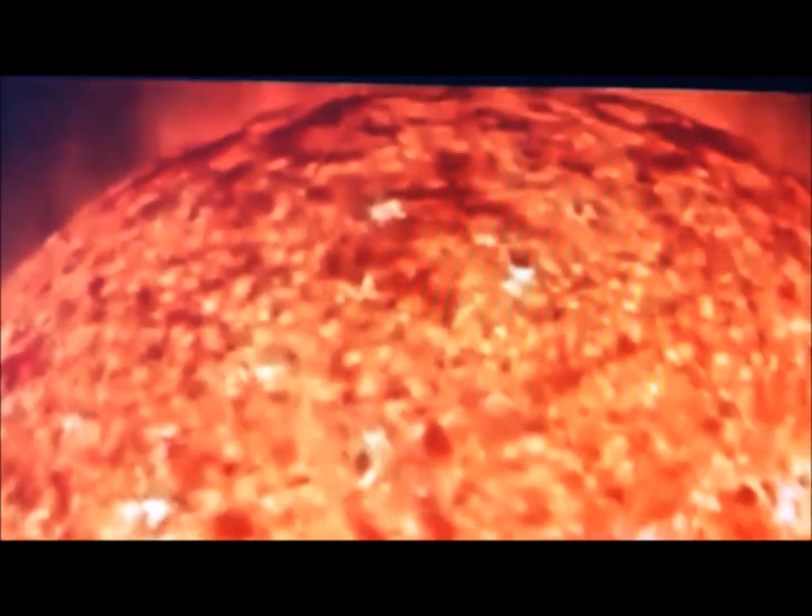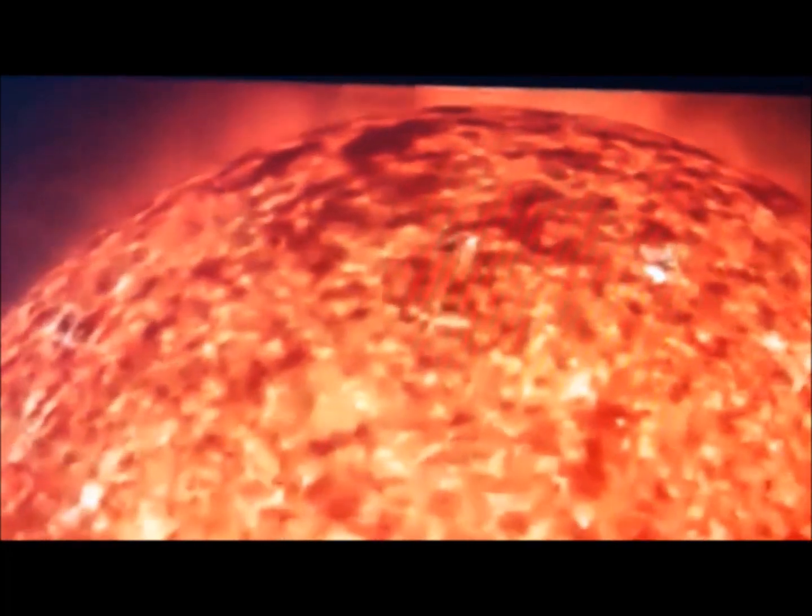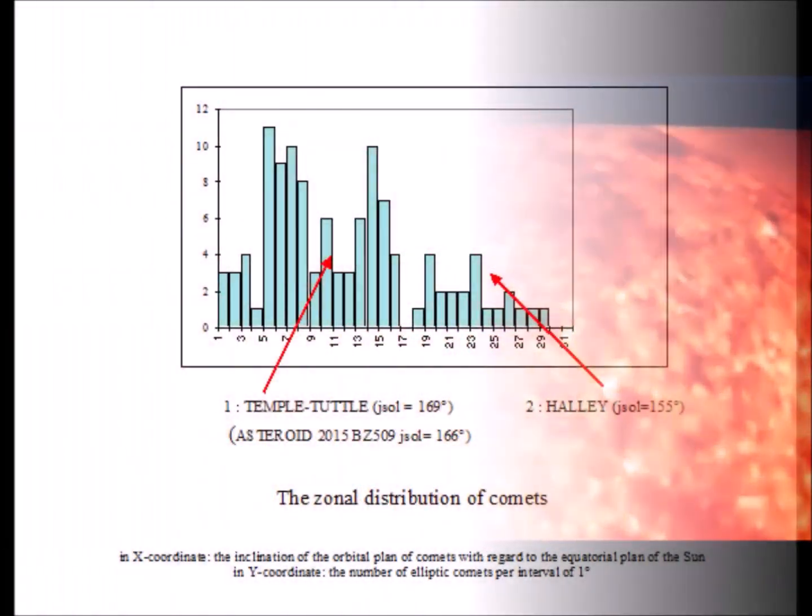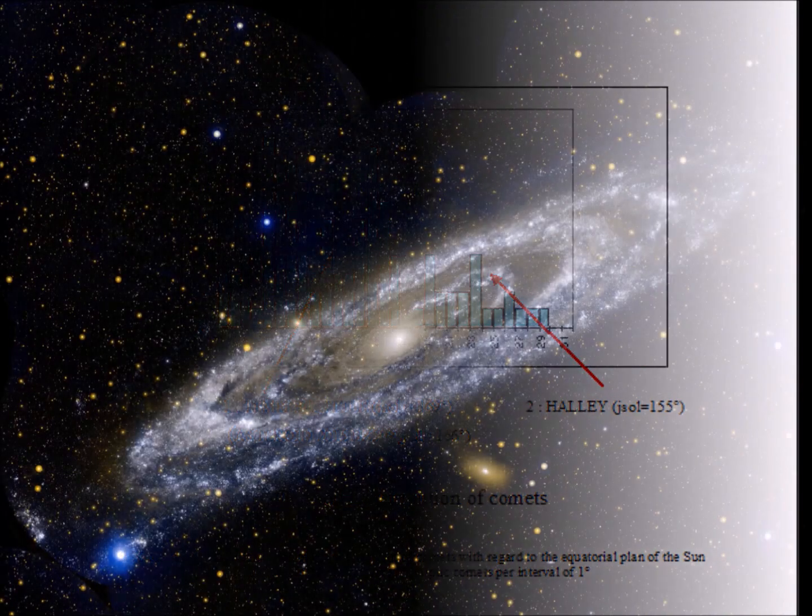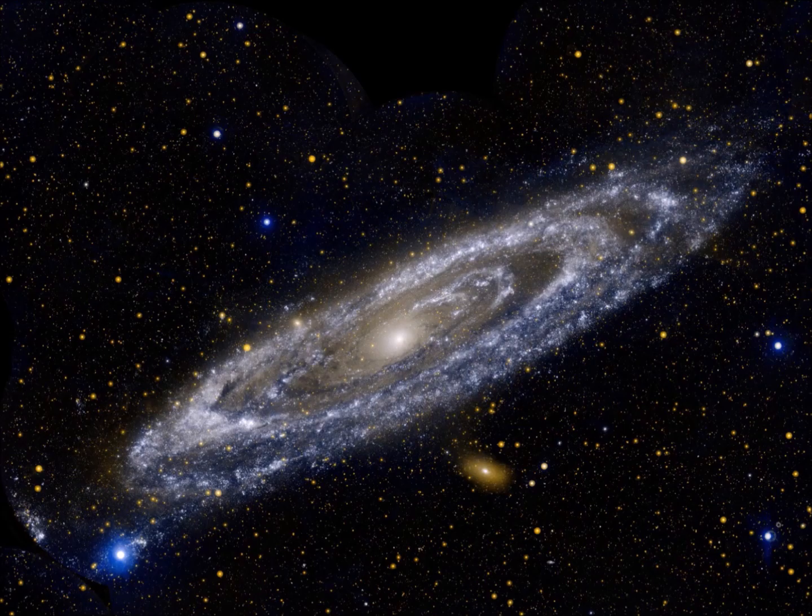The rotation of the Sun on itself is essentially zonal. The inclinations of comet trajectories relative to the equatorial plane of the Sun have a zonal distribution. Retrograde comets are in the gaps in this distribution. The solar system has a zonal characteristic. The stars of galaxies are concentrated in their main plane.